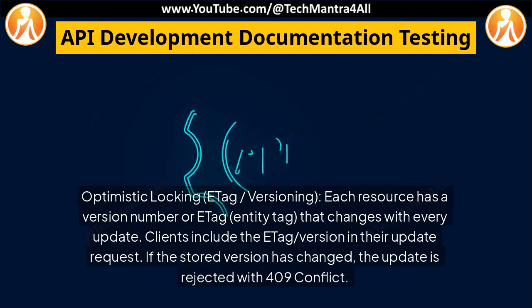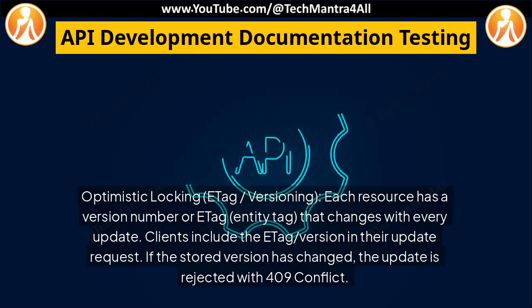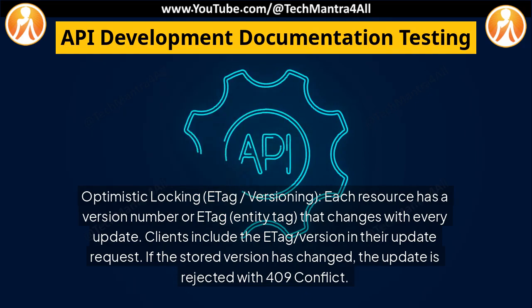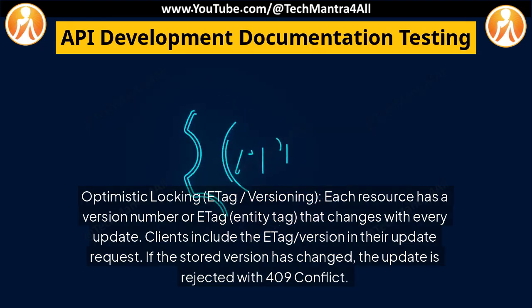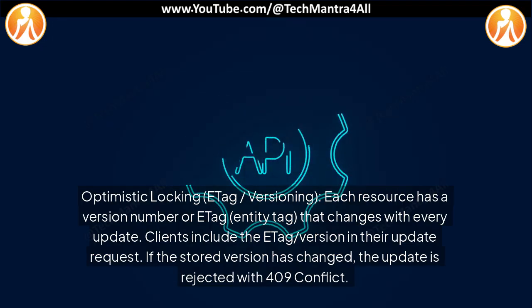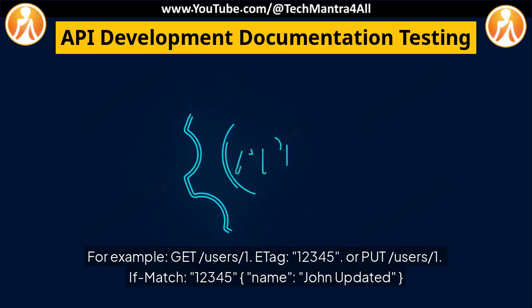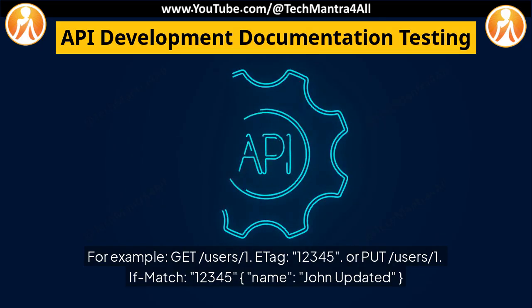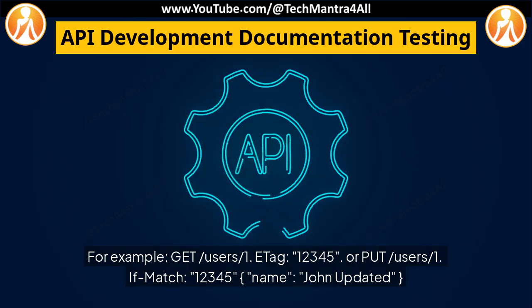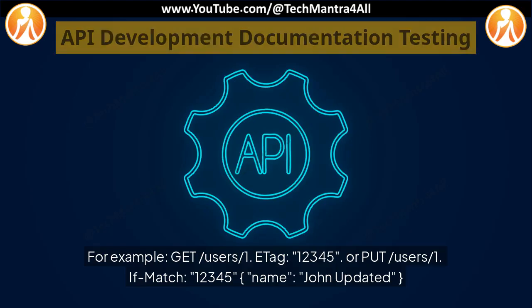Optimistic Locking (ETag versioning): each resource has a version number or ETag (entity tag) that changes with every update. Clients include the ETag or version in their update request; if the stored version has changed, the update is rejected with a 409 Conflict response. For example: GET /user/1 returns ETag: 12345, then PUT /user/1 with If-Match: 12345 and body {"name": "John Updated"}.